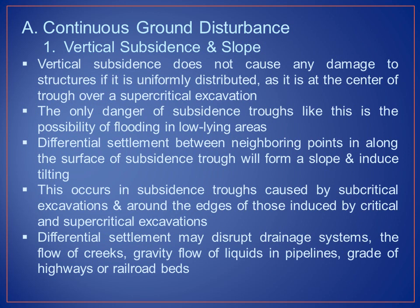Continuous ground disturbance — vertical subsidence and slope: vertical subsidence does not cause any damage to a structure if it is uniformly distributed, as at the center of the trough over a supercritical excavation. The only danger of such a subsidence trough is the possibility of flooding in low-lying areas. Differential settlement between neighboring points will form a slope and induce tilting, occurring in subcritical excavations and around edges of critical and supercritical ones. Differential settlement may disrupt drainage systems, flow of creeks, gravity flow of liquids in pipelines, and grading of highways and railroad beds.